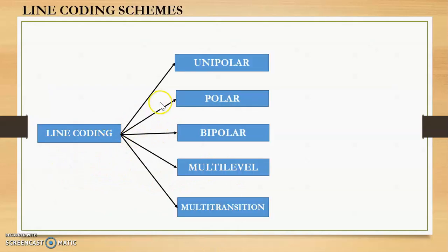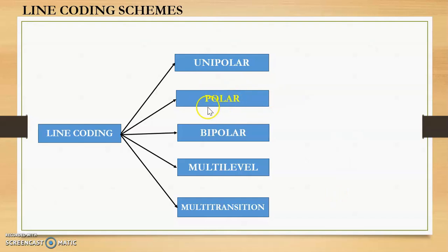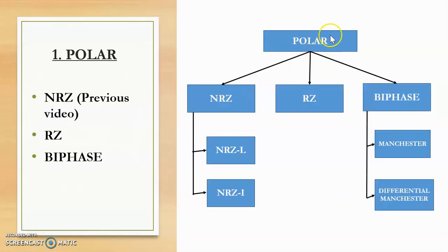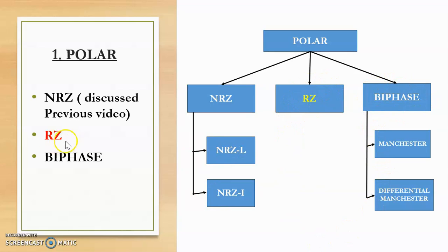As discussed in the previous video, there are five types of line coding schemes: unipolar, polar, bipolar, multilevel, and multitransition. Unipolar was covered in the previous video. Polar has three types: NRZ, RZ, and biphase. NRZ was covered previously, so in this video we will discuss RZ and biphase.